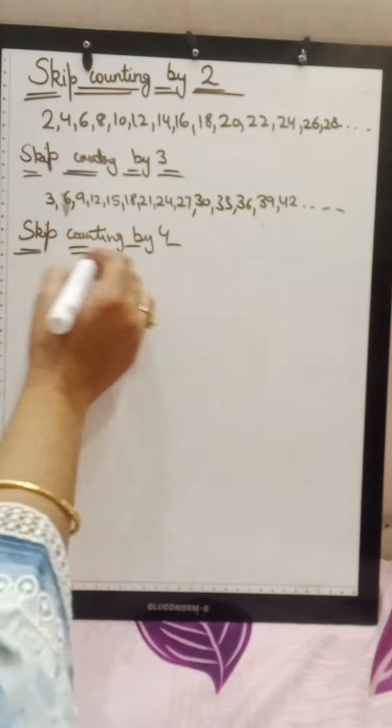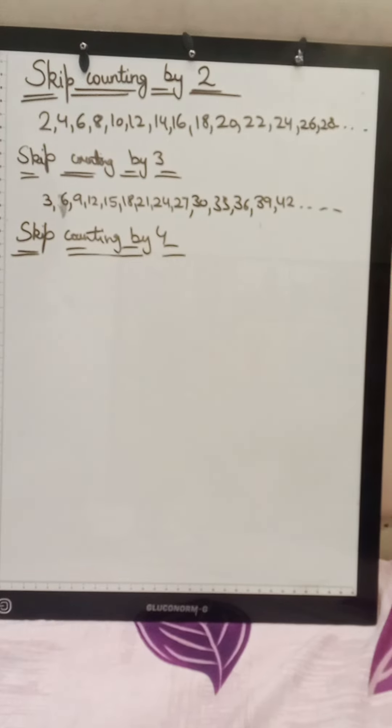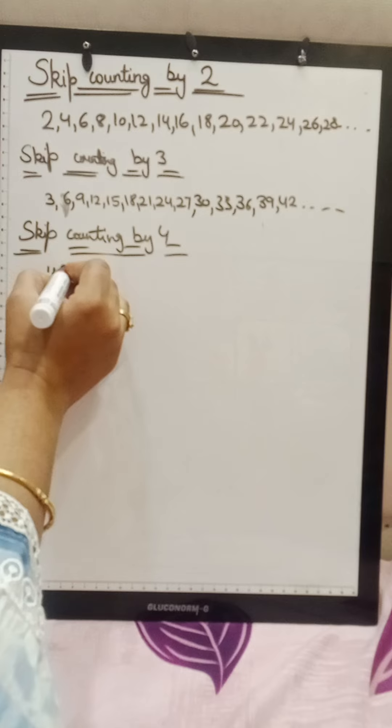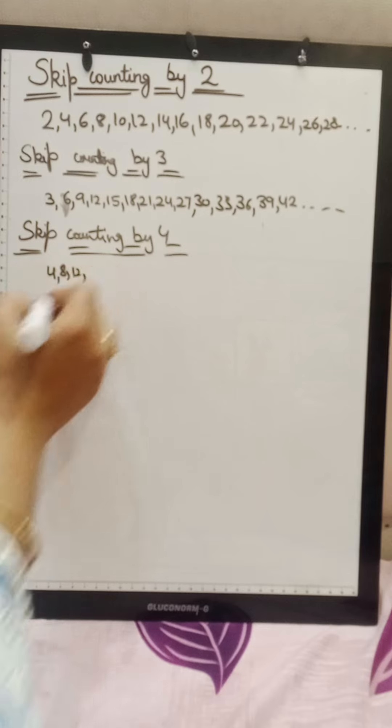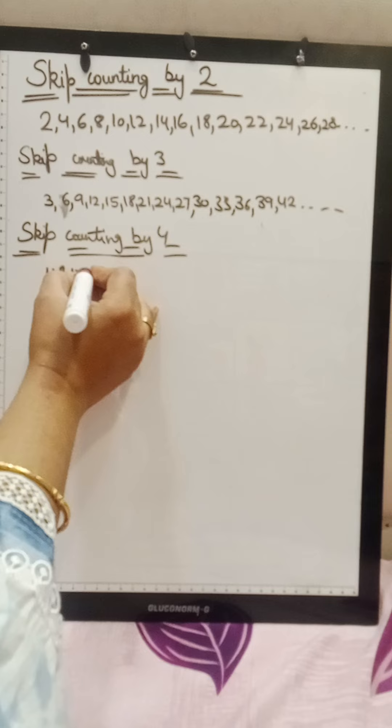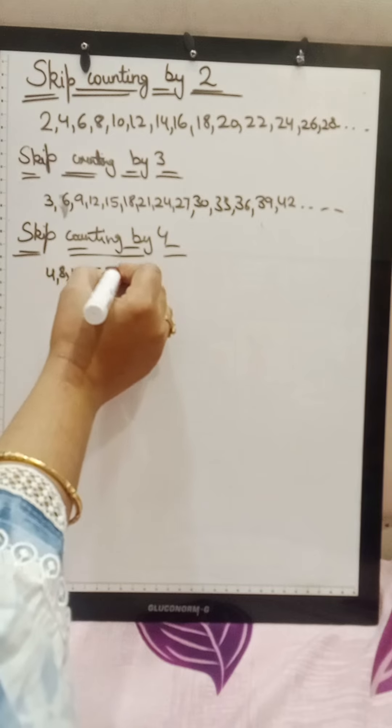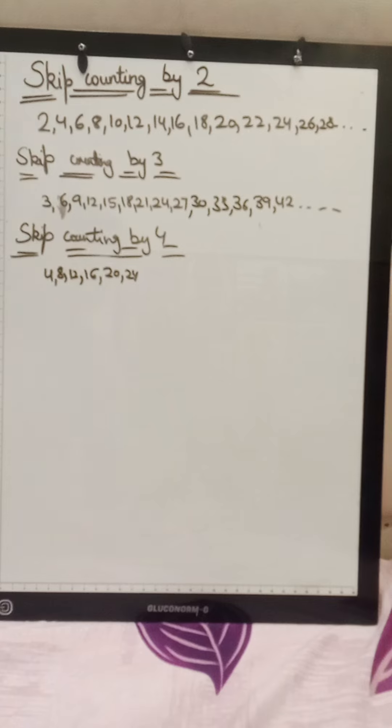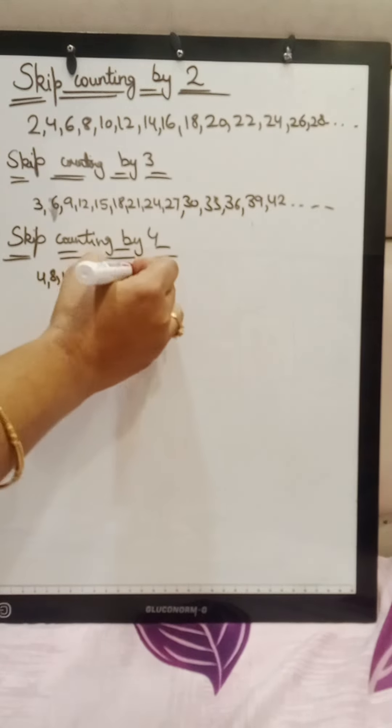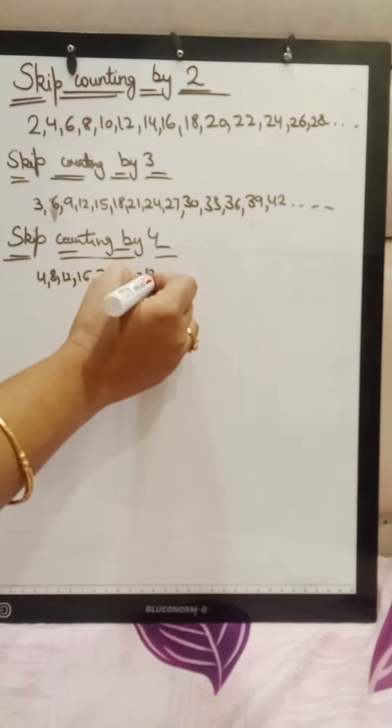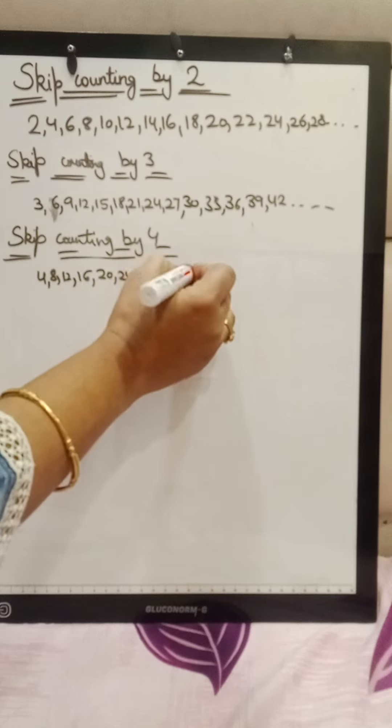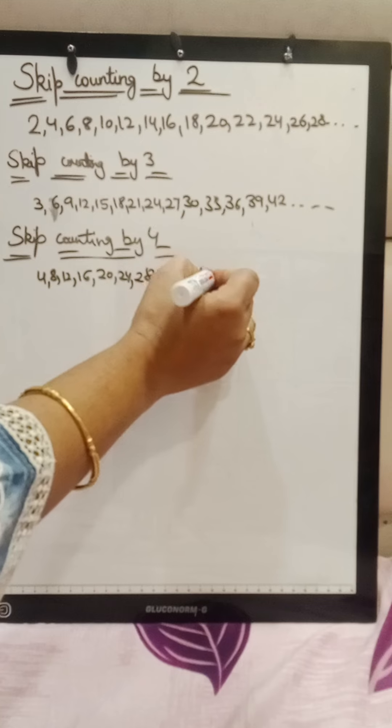If we have 4 from skip counting, then 4 plus 4 is 8, 8 plus 4 is 12, 12 plus 4 what will become? 16, 16 plus 4, 20, 20 plus 4, 24, 24 plus 4, 28, 28 plus 4, 32, 32 plus 4, 36, 36 plus 4, 40.